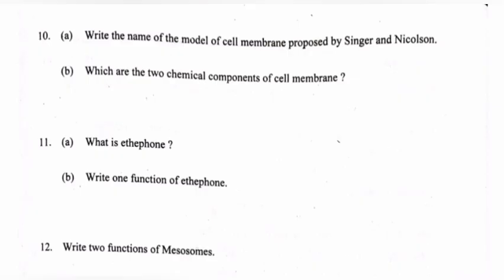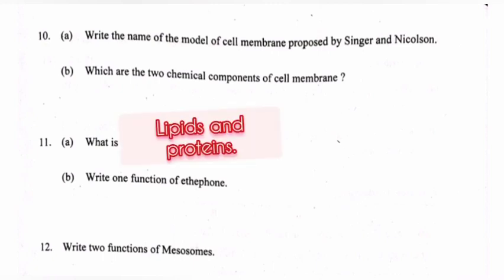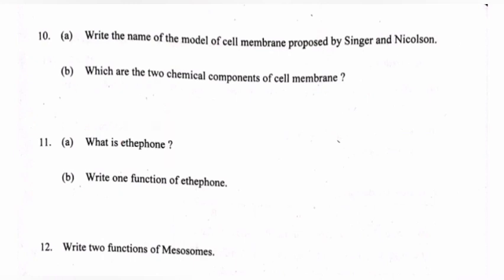A) Write the name of the model of cell membrane proposed by Singer and Nicholson. Answer: fluid mosaic model. B) Which are the two chemical components of cell membrane? Answer: lipids and proteins.